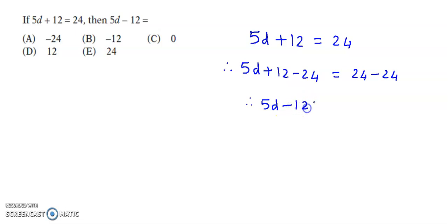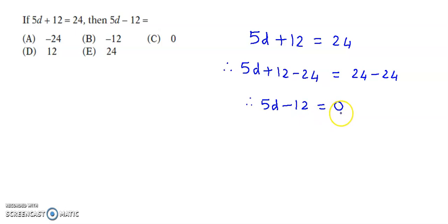So we have 5d, and 12 minus 24 is minus 12, while 24 minus 24 is 0. This gives us 5d minus 12 is equal to 0, so our correct answer is option C.